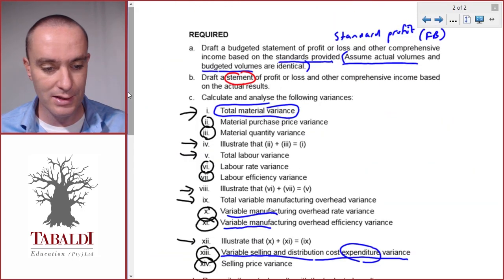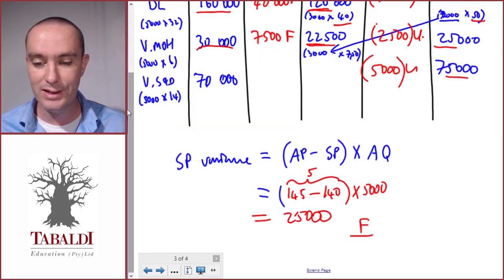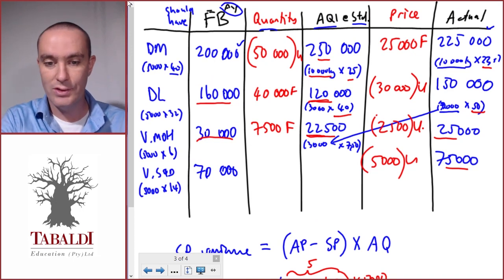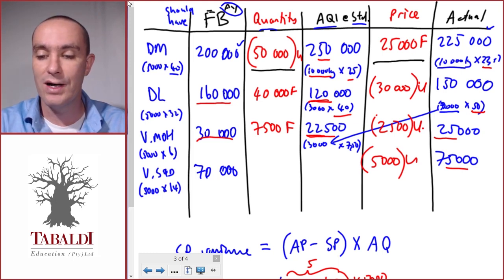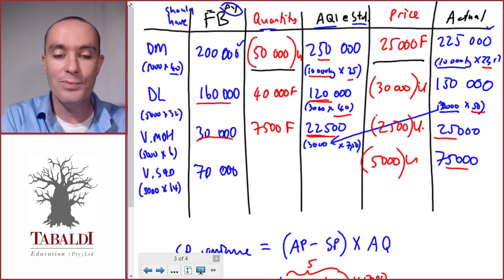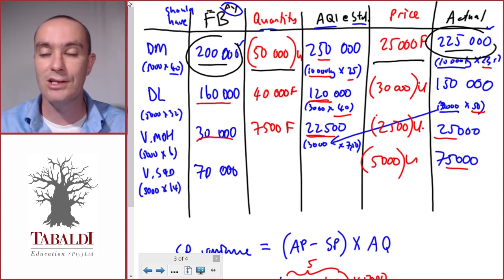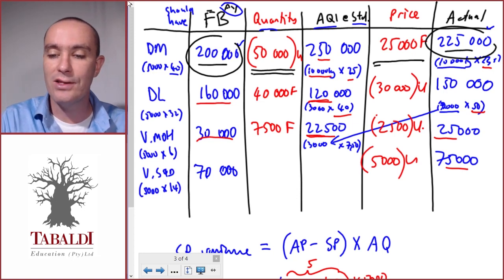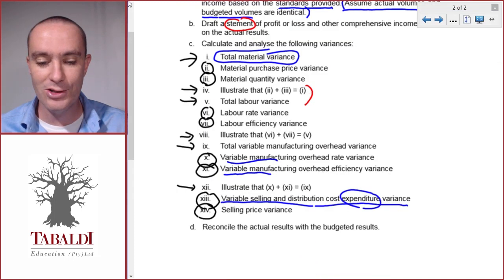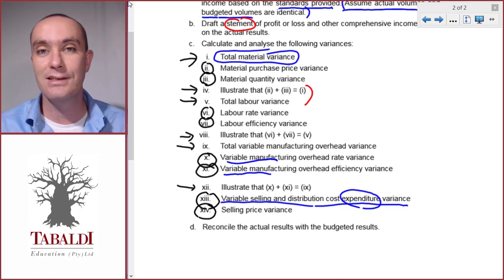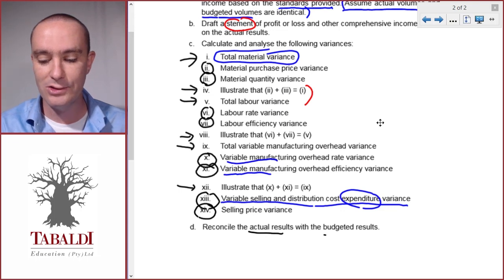Those are all the variances required. The circled ones are the detailed variances to calculate; the others simply ask you to add them to confirm the total. For example, the material quantity variance of negative 50,000 plus the favorable price variance of 25,000 gives a total material variance of negative 25,000, which matches the difference between flexible budget and actual. Next we'll look at how to reconcile the actual results with the budgeted results.